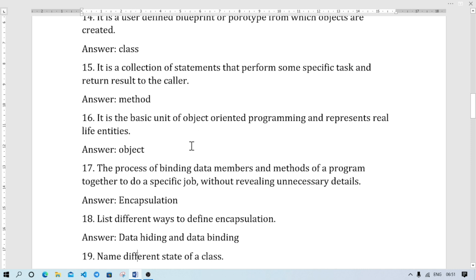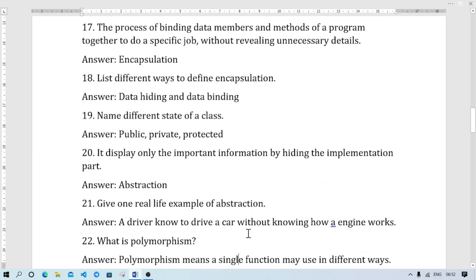Number 17: The process of binding data members and methods of a program together to do a specific job without revealing unnecessary details. It is called encapsulation. Encapsulation example is capsule - the capsule is covered with powder inside. The same way data can be hidden from other users. Perfect definition to remember. The one-word answer is encapsulation. Different ways of encapsulation are two types: data hiding and data binding, means data to hide and data to bind.